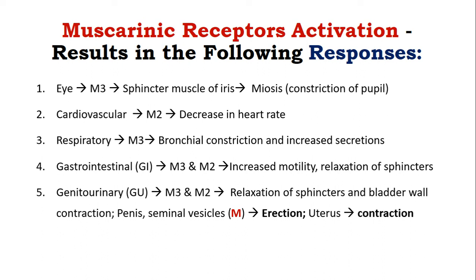In the genitourinary system, both M3 and M2 get activated. There will be relaxation of the sphincter, but the bladder wall — that is the detrusor muscle — gets contracted. The uterine smooth muscle also contracts. With respect to the penis and seminal vesicles, it helps in erection. With respect to the glands, M3 receptor activation in the salivary, lacrimal, and other glands leads to increased glandular secretions.